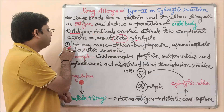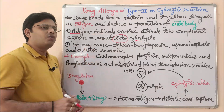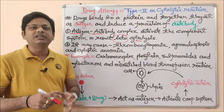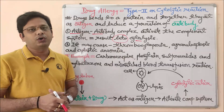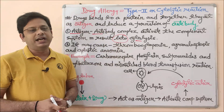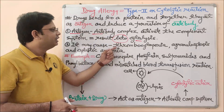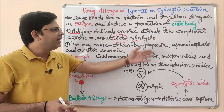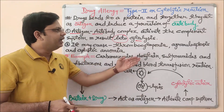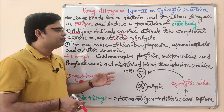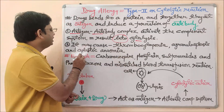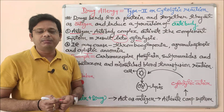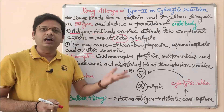There will be death of the particular cell or particular part where this kind of interaction is taking place. Now, what are the basic examples and complications of this Type 2 cytolytic reaction? These are thrombocytopenia, agranulocytosis, and aplastic anemia.